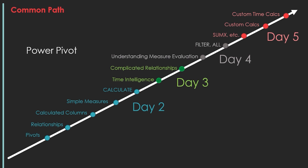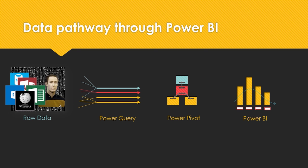Now that we know how to grab our raw data, put it into Power Query, and we're starting to talk about Power Pivot, let's take a look at the normal data pathway through Power BI. We start with raw data, then pass all of that data through Power Query to normalize and manage it. Once we have normalized it, we land it in Power Pivot where we can do all of the interesting data modeling. After that, we use Power BI to create some really nice-looking visuals. That is our pathway.